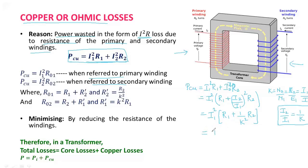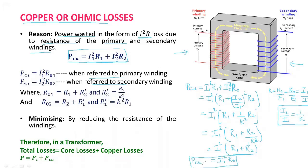Finally we get I1²(R1 + R2/K²), which can be written as I1²(R1 + R2'), where R2' = R2/K². This full resistance can be written as R01, so the total copper loss referred to the primary winding is I1²R01, where R01 = R1 + R2' and R2' = R2/K².